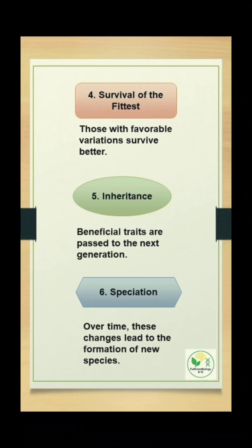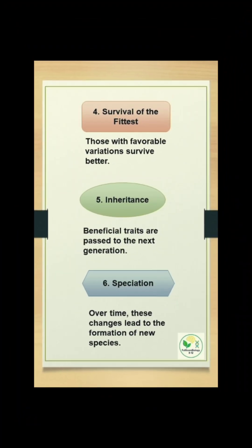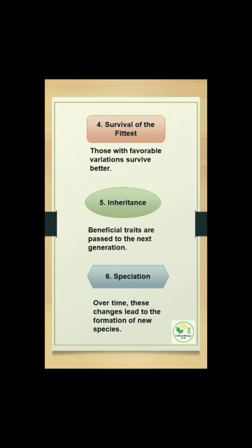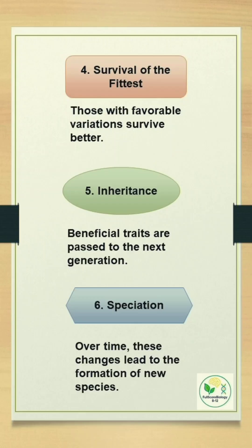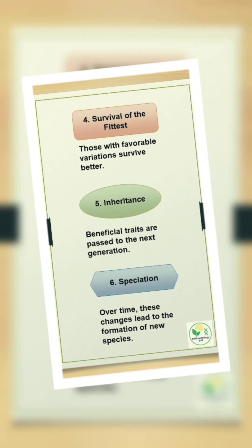That is, they are inherited. Over time, these changes lead to the formation of new species. This process is known as speciation. This is the main idea of Darwin, which is known as the theory of natural selection.